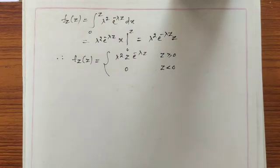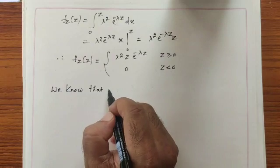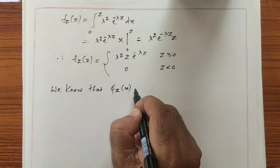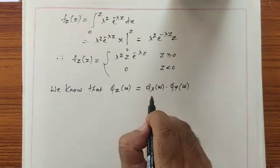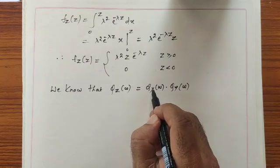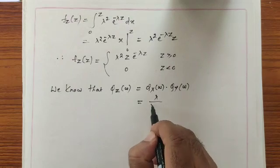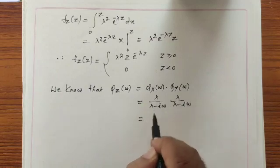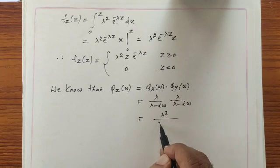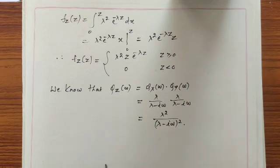Now we find the characteristic function of z. We know that φ_z(ω) = φ_x(ω)·φ_y(ω). From the previous chapter, the characteristic function of an exponential distribution is λ/(λ − iω). Therefore, multiplying the two, the characteristic function of z is λ²/(λ − iω)², which is the characteristic function of the sum of two independent exponentially distributed random variables.